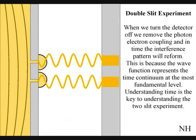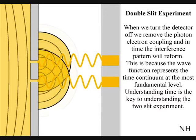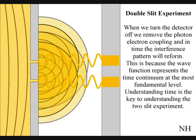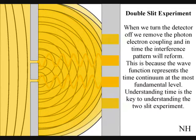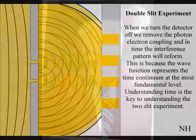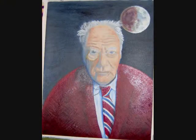If we turn the detector off, we remove the photon-electron coupling, and in time the interference pattern will reform. Just like in Newton's first law of motion, the interference pattern will continue to maintain its state unless acted upon by an external force.